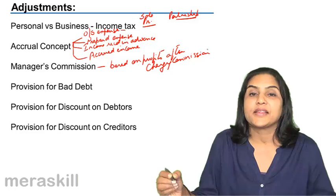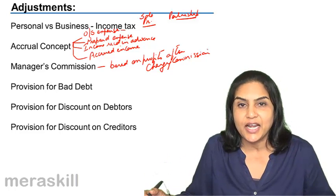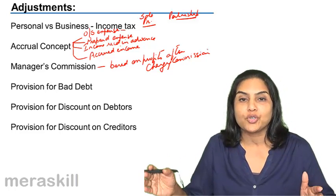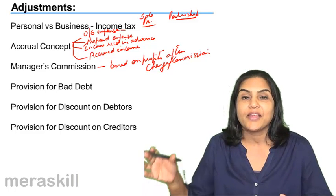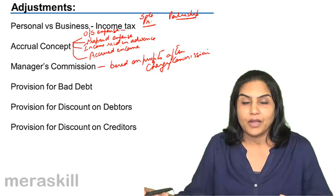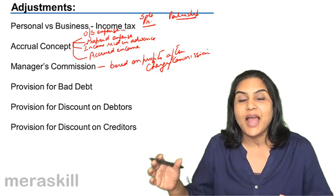In that case, we have to adjust our calculations a bit because the total amount of 2 lakhs that we have said as net profit, that would include manager's commission and profit.